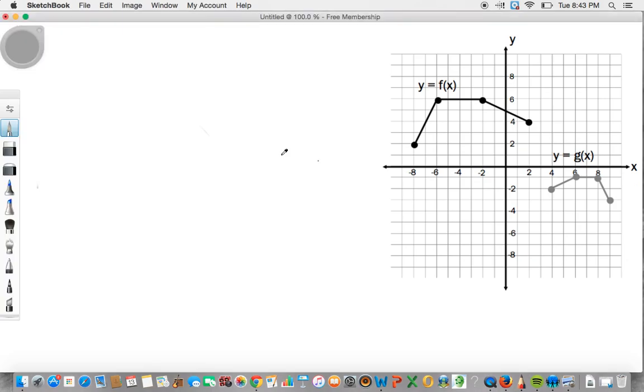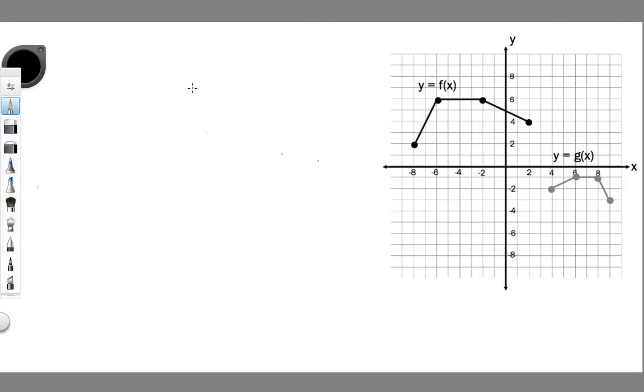Hey guys, Mr. B here bringing you another math video, this one on transformations of graphs. In this particular example, we have two graphs given to us: the original graph here, y equals f of x, and the transformed graph, y equals g of x.